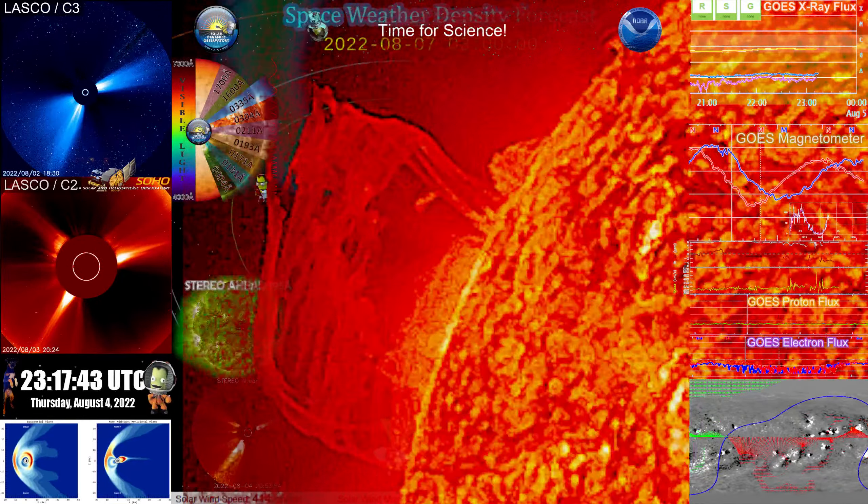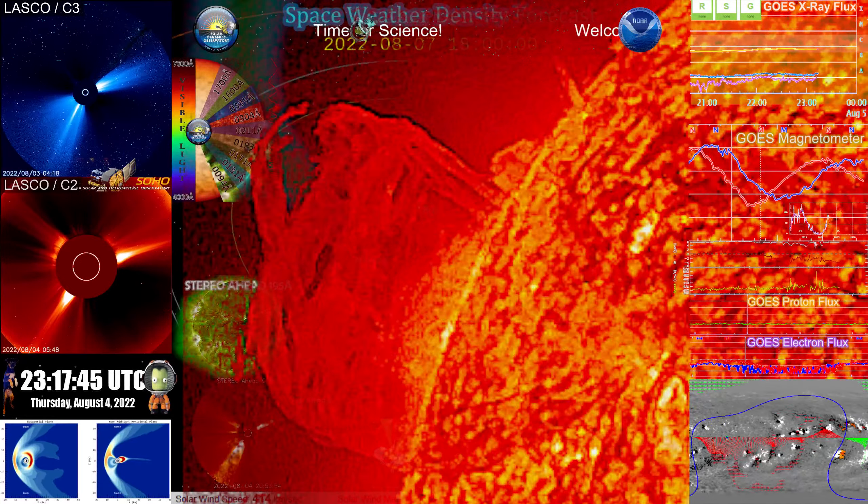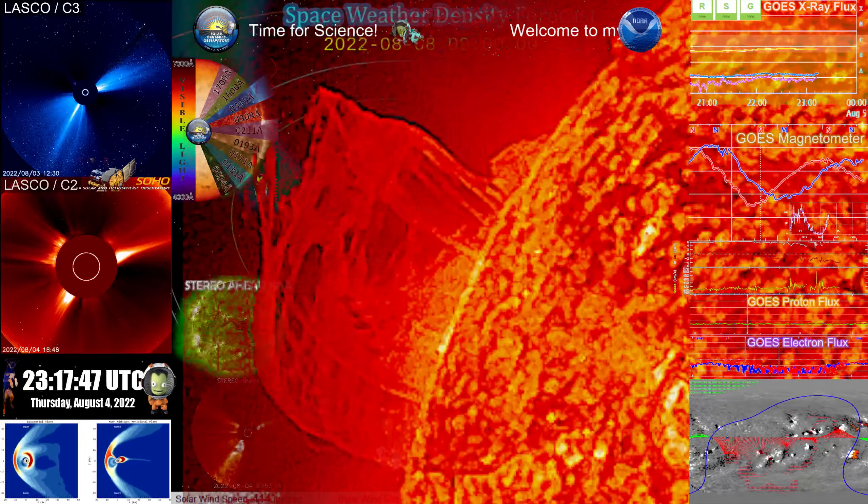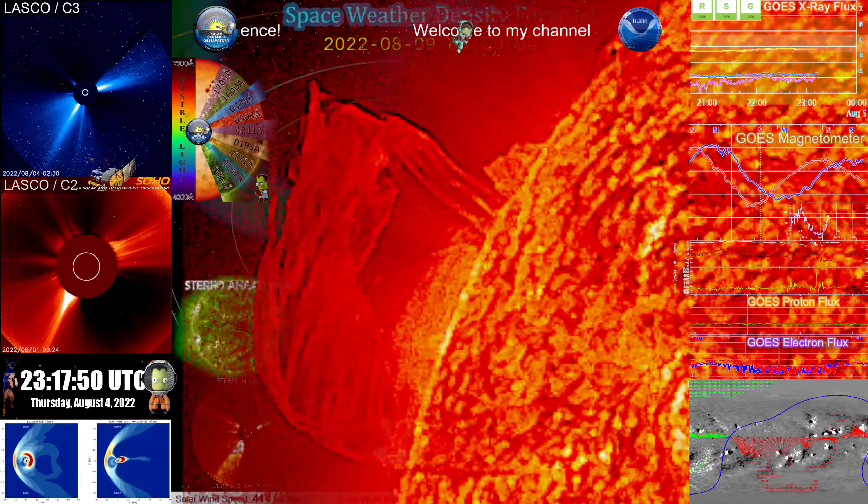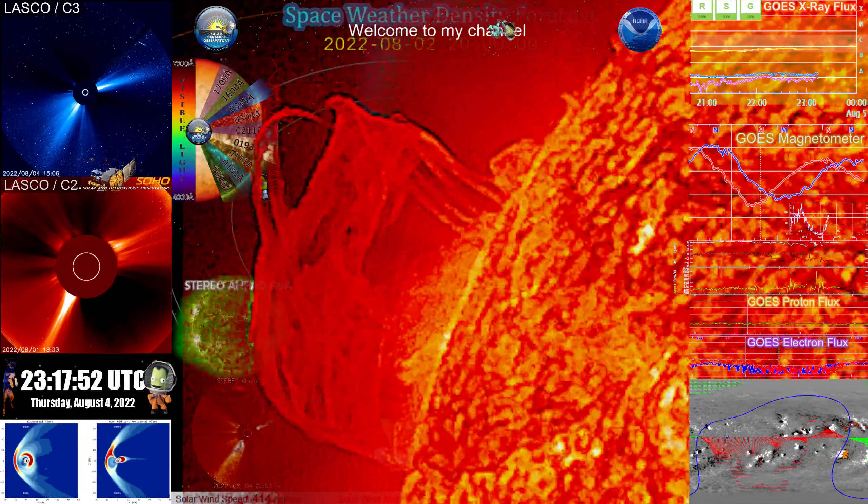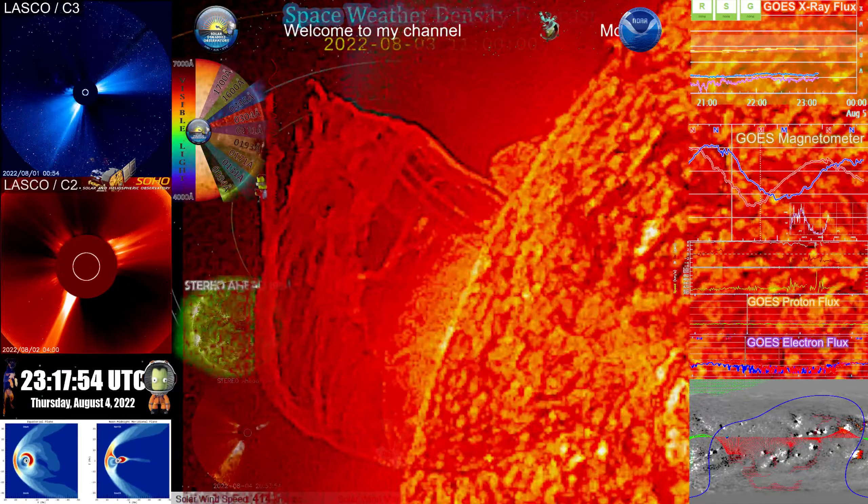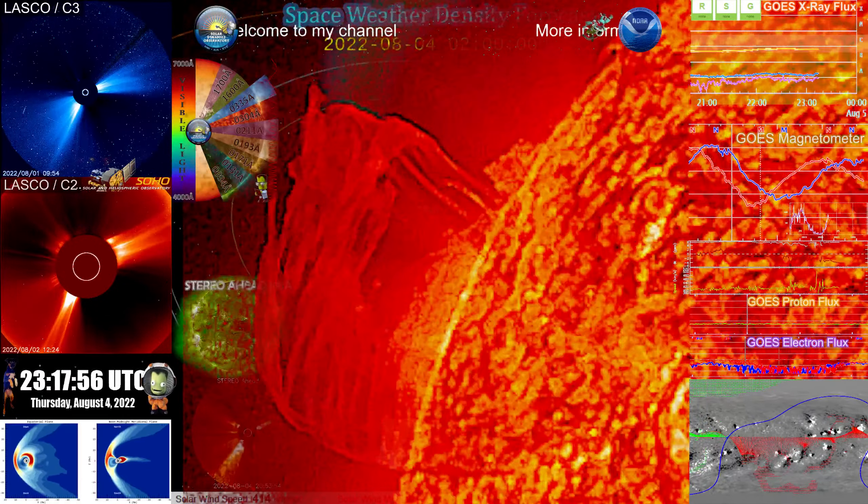So this would definitely be a situation where if an event happens, we would expect a G5, possibly, and there will be power outages and things of that nature. So that's a good warning to have.